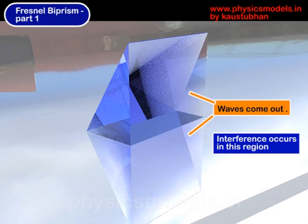Now, if you look at the rear side of this biprism, you can see a flat wall created by joining of those two pieces. And when the waves come out after refraction, there will be interference happening in that area.